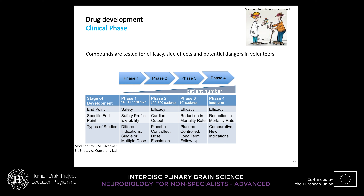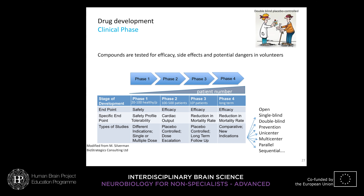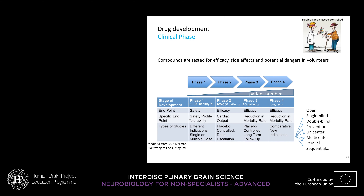The last stages of the drug development program are the clinical phases — the most costly part because patient numbers increase toward the end. Each phase is defined by an endpoint: Phase 1 safety, Phase 2 efficacy, Phase 3 efficacy, Phase 4 long-term efficacy, with specific endpoints depending on the drug target — for example, cardiac output for a heart drug. Different study designs are used: open, single-blinded, double-blinded, prevention trials, etc. Once a drug has passed all these phases it is finally marketed.